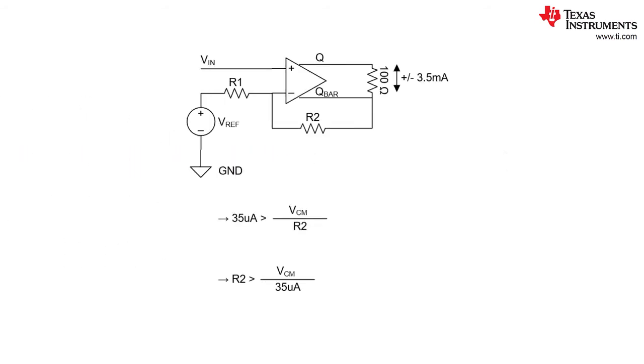I would now like to highlight the importance of selecting R2 when using the TLV 3604 with LVDS outputs. The TLV 3604 typically supplies 3.5 milliamps of current through the 100 ohm output resistor. A good rule of thumb is to have 100 times less current through the feedback loop completed by R2. This means that the common mode voltage divided by R2 should be less than 35 microamps. This will minimize leakage current through R2 reducing the impact on the LVDS output levels.